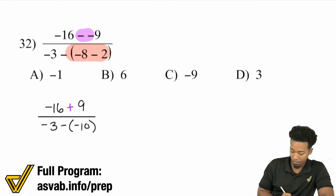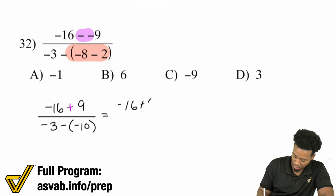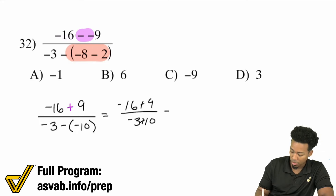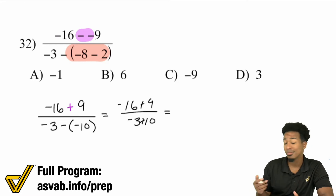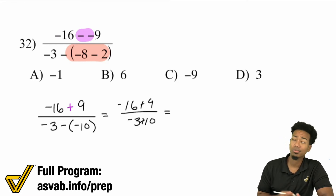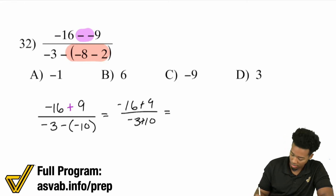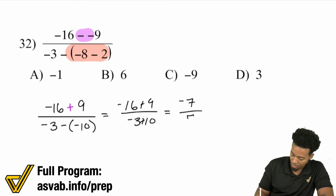Continuing after the break: minus negative becomes plus, so we have negative 16 plus 9 over negative 3 plus 10. Negative 16 plus 9 is the same as 16 minus 9 but negative, giving negative 7. Negative 3 plus 10 is positive 7. So negative 7 divided by 7 equals negative 1, and that's the answer.